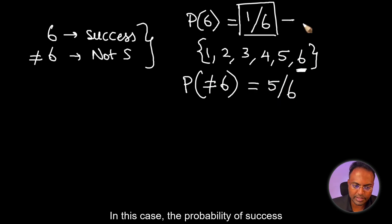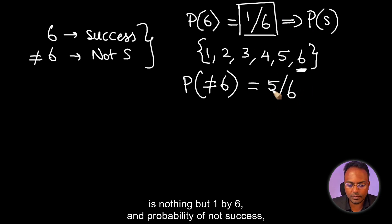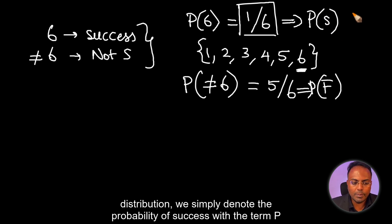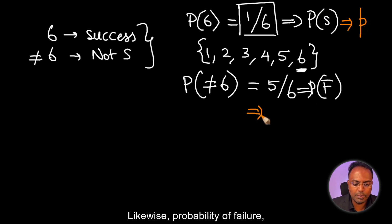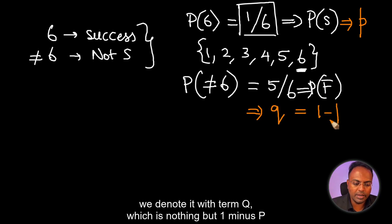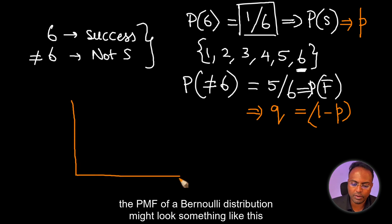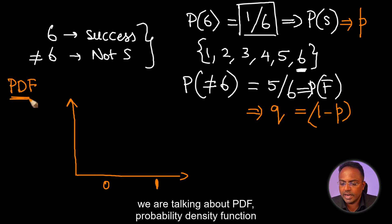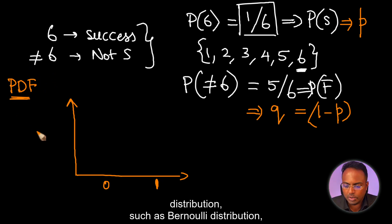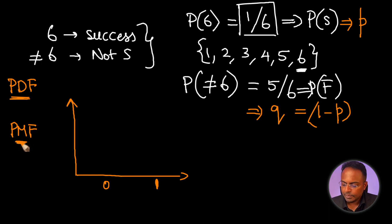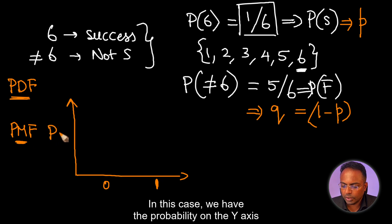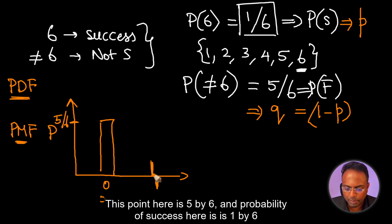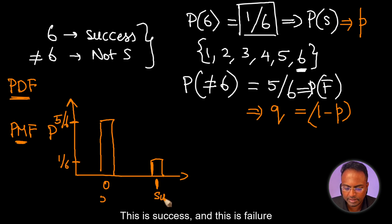So in this case, the probability of success is 1/6 and the probability of failure is 5/6. With respect to Bernoulli distribution, we denote the probability of success with the term P, and probability of failure with the term Q, which is nothing but 1 minus P. The PMF of a Bernoulli distribution shows 0 and 1 on the x-axis. Unlike normal distribution where we use PDF, for discrete distributions like Bernoulli we use PMF — probability mass function — with probability on the y-axis. The probability of failure is 5/6 and the probability of success is 1/6.